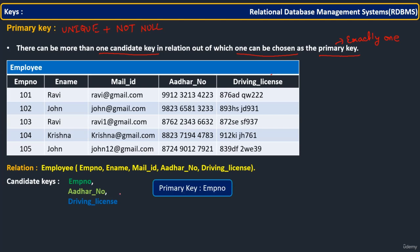In this scenario, we selected EMP number as the primary key. To summarize: if the candidate key part is clear, then primary key is clear. Primary key is a subset of or equal to candidate keys. Candidate keys may be greater than or equal to one, but the primary key is always exactly one, not more than that.